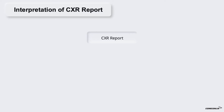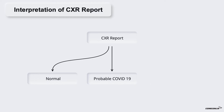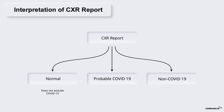Interpretation of CXR Report. While reading a COVID-19 CXR report, we often come across three types of interpretations: Normal CXR, Probable COVID-19 CXR, and Non-COVID-19 CXR. A Normal CXR suggests no abnormal findings on CXR, but this does not exclude COVID-19. Probable COVID-19 CXR suggests classical findings suggestive of COVID-19. Non-COVID-19 CXR suggests that the patient has an alternative diagnosis.